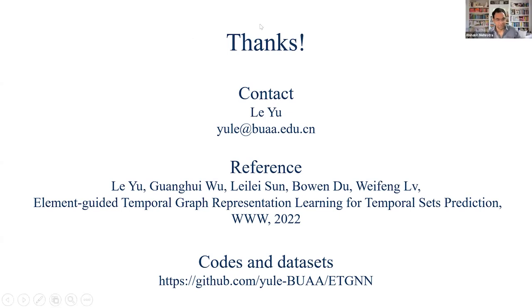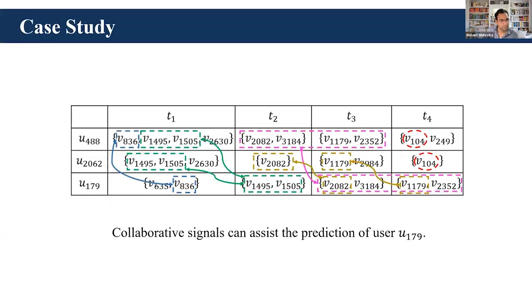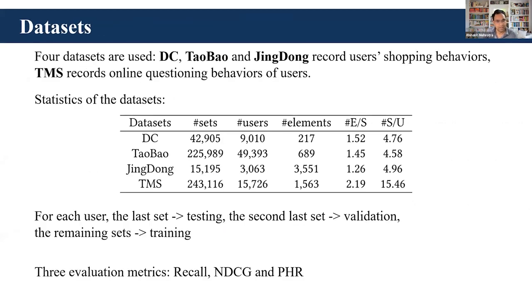Thanks so much. This was an amazing presentation, and thanks for sharing the datasets and the code. The GitHub link is there for everybody to go and pick up the dataset and try to reproduce the results. One question around evaluation: when evaluating sets, one thing a model can try to do is predict more elements, which gives an unfair advantage. If the set had three elements but I'm making a prediction of four or five, you can game the recall metrics slightly. Do you look at any evaluation conditioning on the number of elements predicted, or are you also predicting how many elements should appear in the future set?